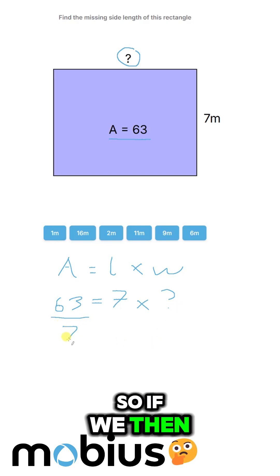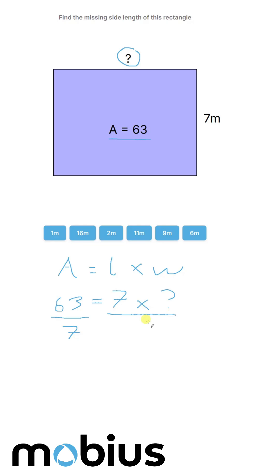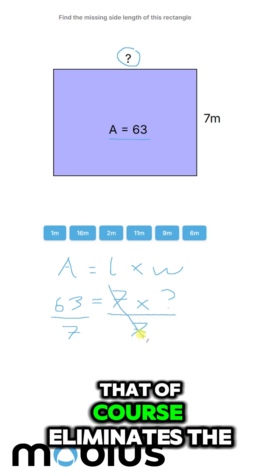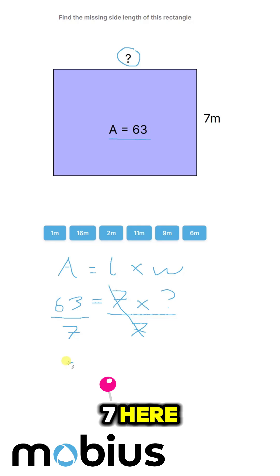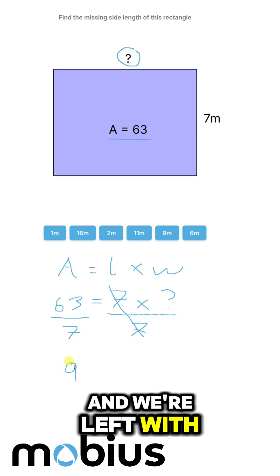So if we then divide both sides by seven, that of course eliminates the seven here, and we're left with nine.